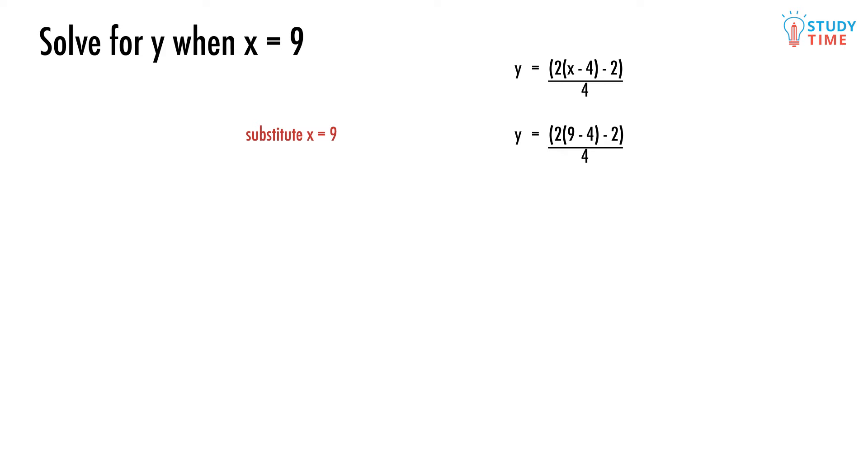We start with brackets, and the key is to do the inner brackets first. 9 minus 4 equals 5.